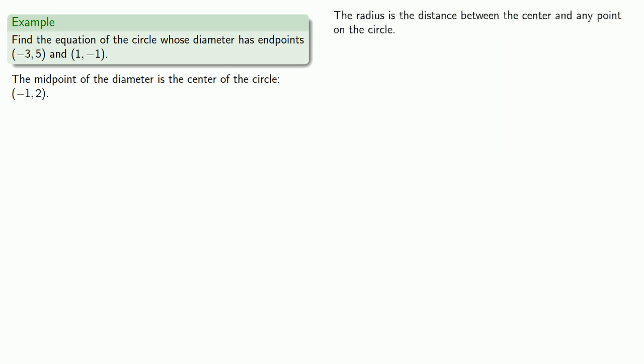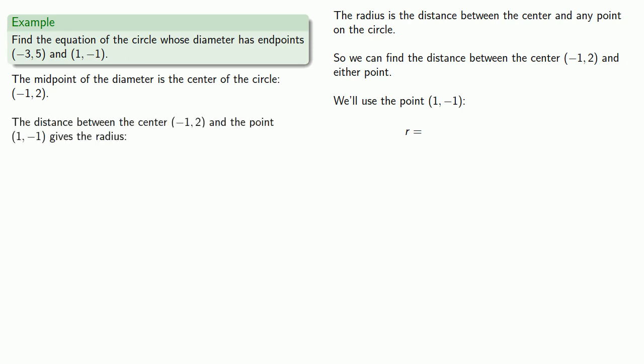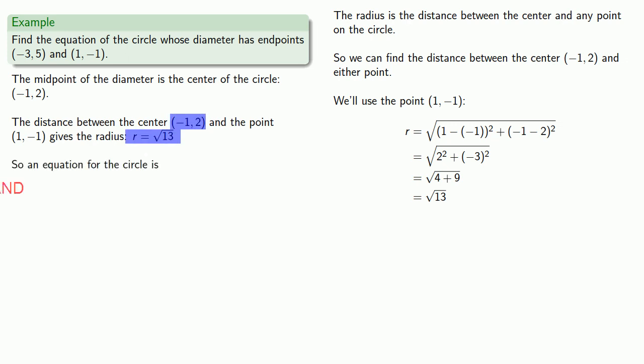The radius is the distance between the center and any point on the circle. We know where the center is, we know two points on the circle, so we can find the distance between the center (-1, 2) and either point. We'll use the point (1, -1). This tells us the radius is √13, so we have the center, we have the radius, and now we can write the equation of the circle.